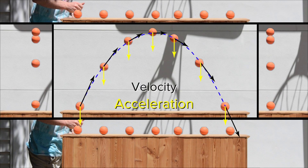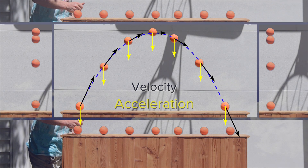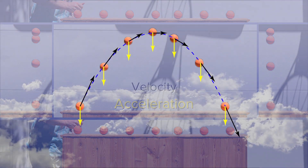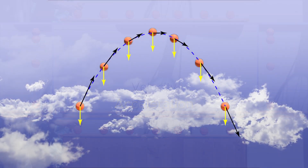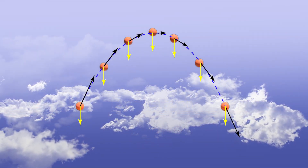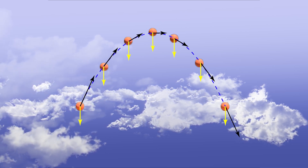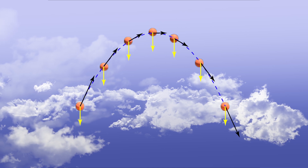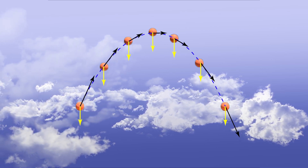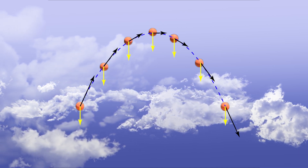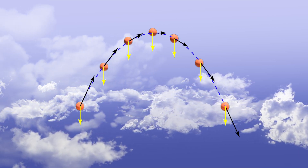And that is a visual description of the velocity and acceleration components of an object in projectile motion. There you have it. We just demonstrated the horizontal and vertical components of projectile motion by building velocity and acceleration vector diagrams. Thank you very much for learning with me today. I enjoyed learning with you.